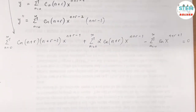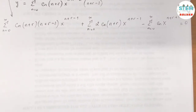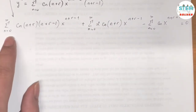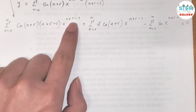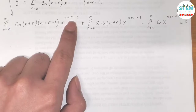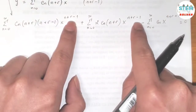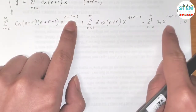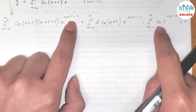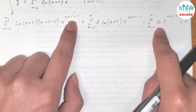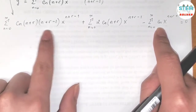Now look at the index of the powers. When n equals 0 in the first series we get x to the (r-1); in the second series also x to the (r-1); and in the third series x to the (r+1). This is the highest exponent, and we will run the terms for each power series accordingly.